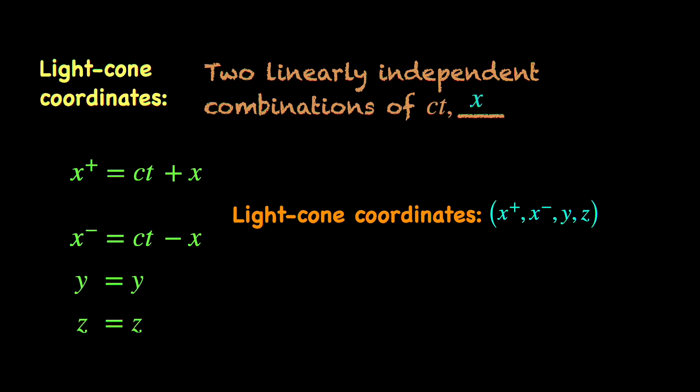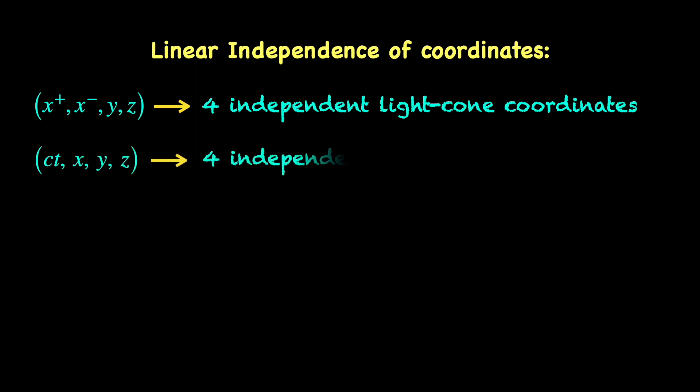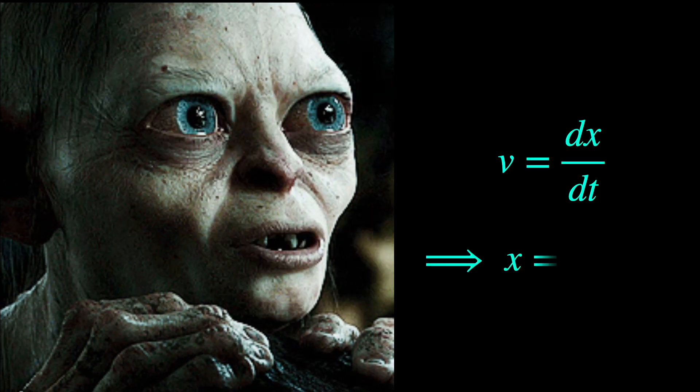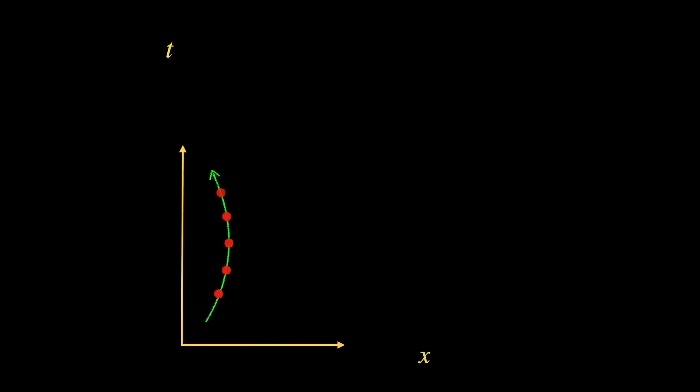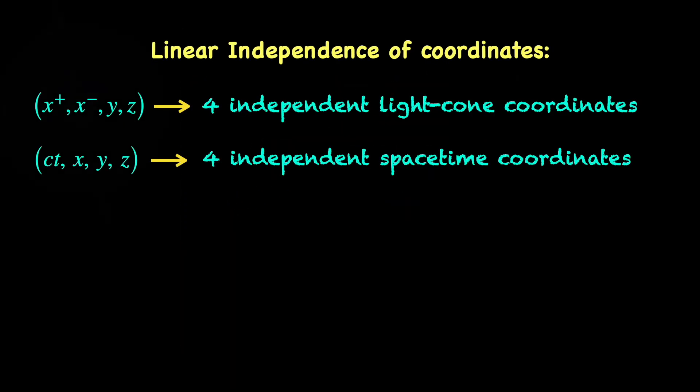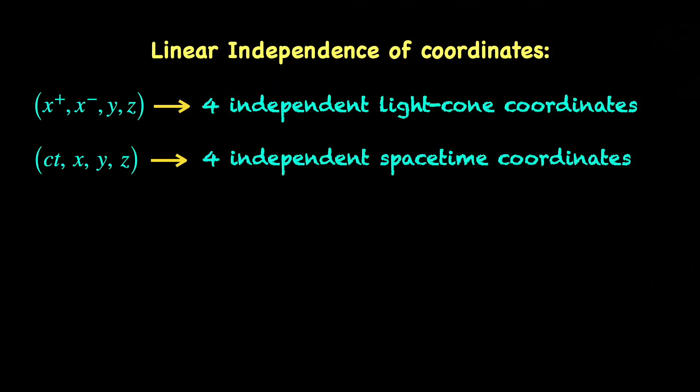Alright, but what is this linearly independent business? Simply put, x minus and x plus are independent variables just like ct and x are independent variables. If you are thinking of velocity being dx/dt, so x must be a function of time, so x is not independent, etc. No, that is only true for events on the trajectory of a particle. In general, for any given event in spacetime, all its space coordinates and time coordinates are mutually independent in the sense that one cannot be written in terms of the others.